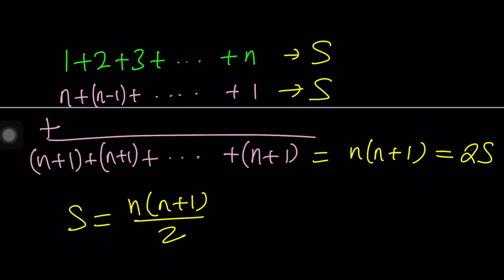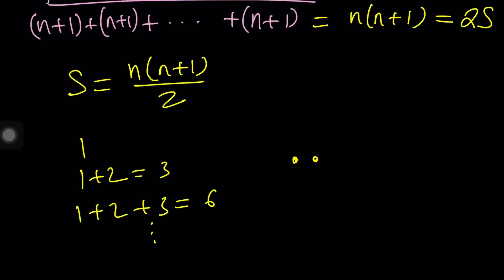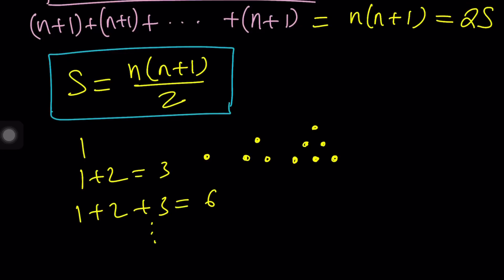These numbers are very special. For example: 1 is 1, 1 plus 2 is 3, 1 plus 2 plus 3 is 6, and so on. These are called triangular numbers, because if you take 6 dots you can make a triangular pattern, and likewise with 3 or 1. There's a clear pattern and they're all triangular shaped — that's why they're called triangular numbers. We have a formula and we know what they're called, but how do we find the original sum?